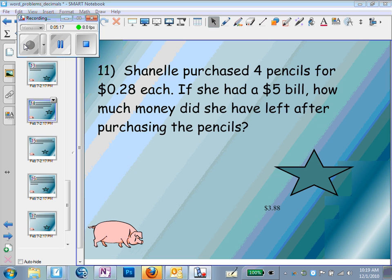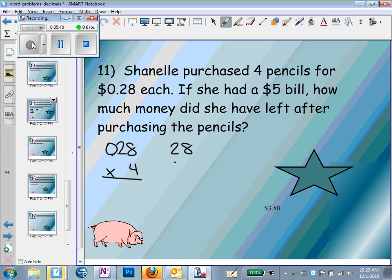Shanelle purchased four pencils for $0.28 each. Each one is $0.28. If she had a $5 bill, how much money did she have left after purchasing the pencils? So the first thing we need to do is figure out how much the pencils cost. So we're going to multiply $0.28 times 4. Now we don't really need to worry about the decimal. So what we're really doing is just multiplying 28 times 4.